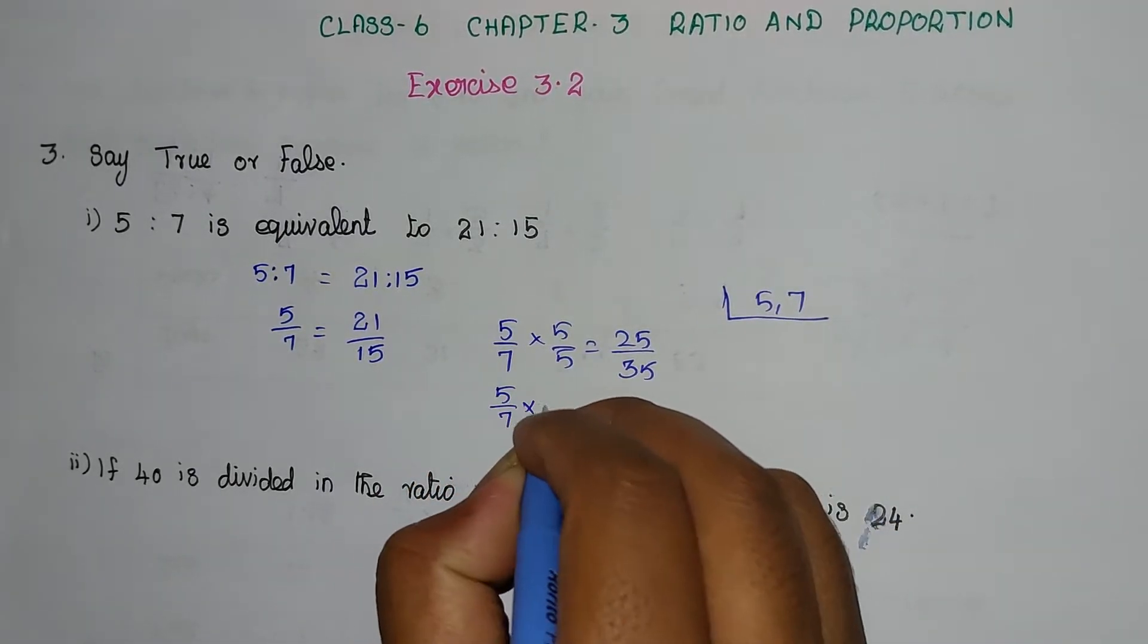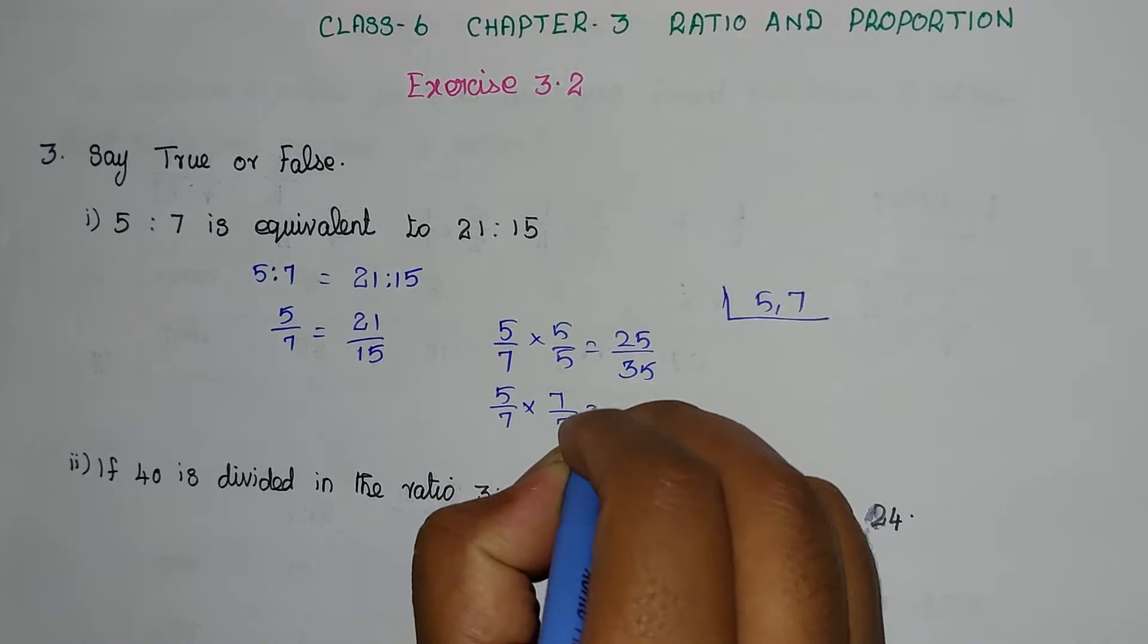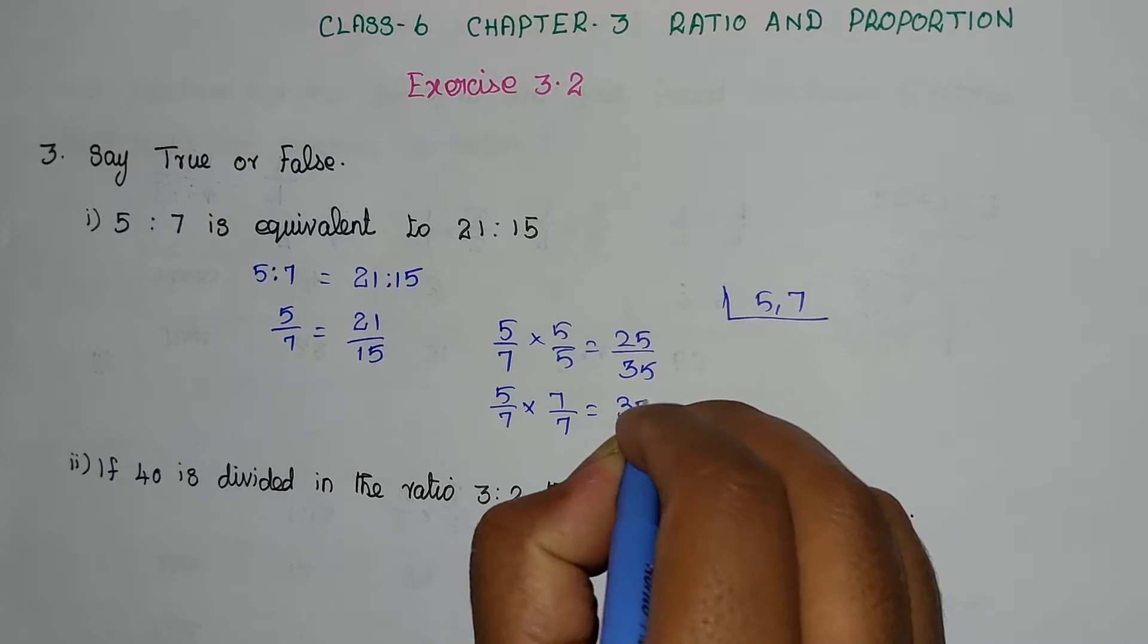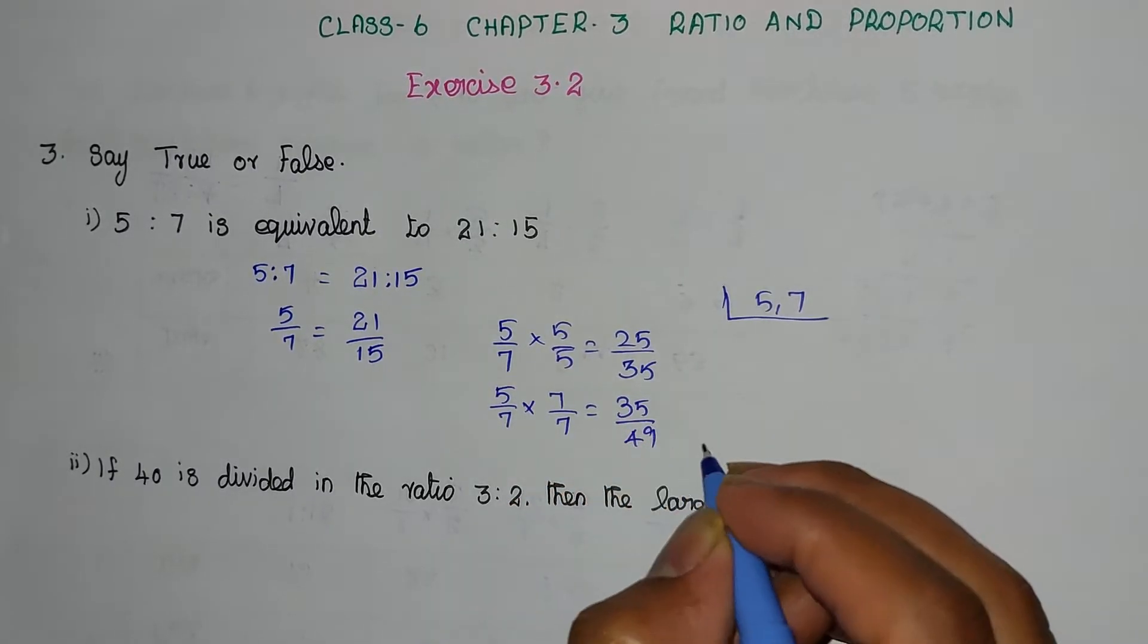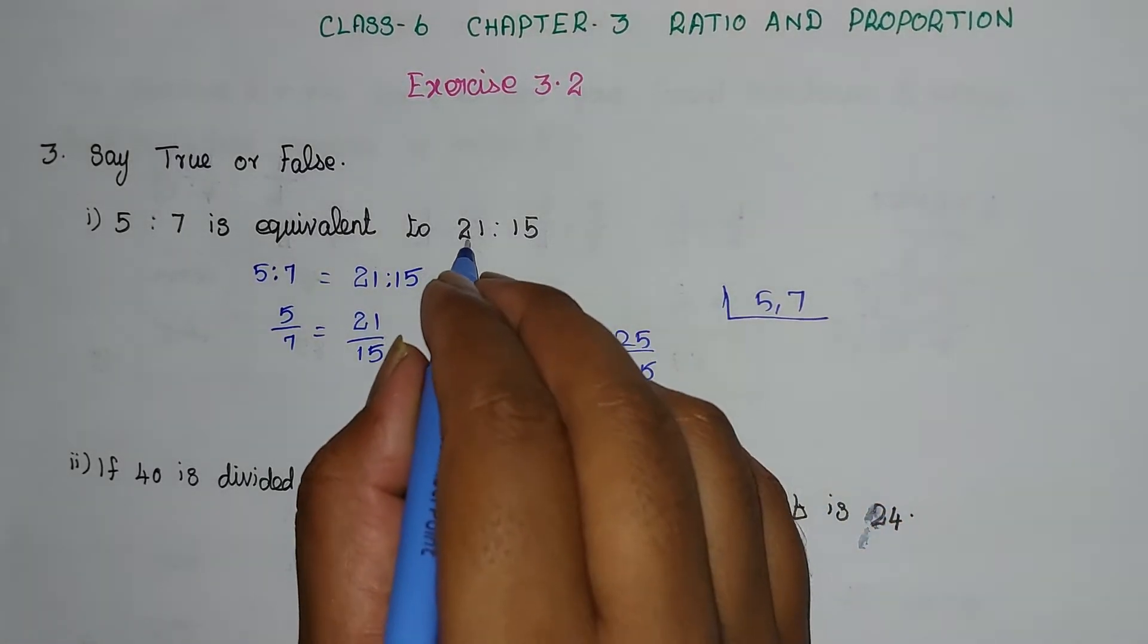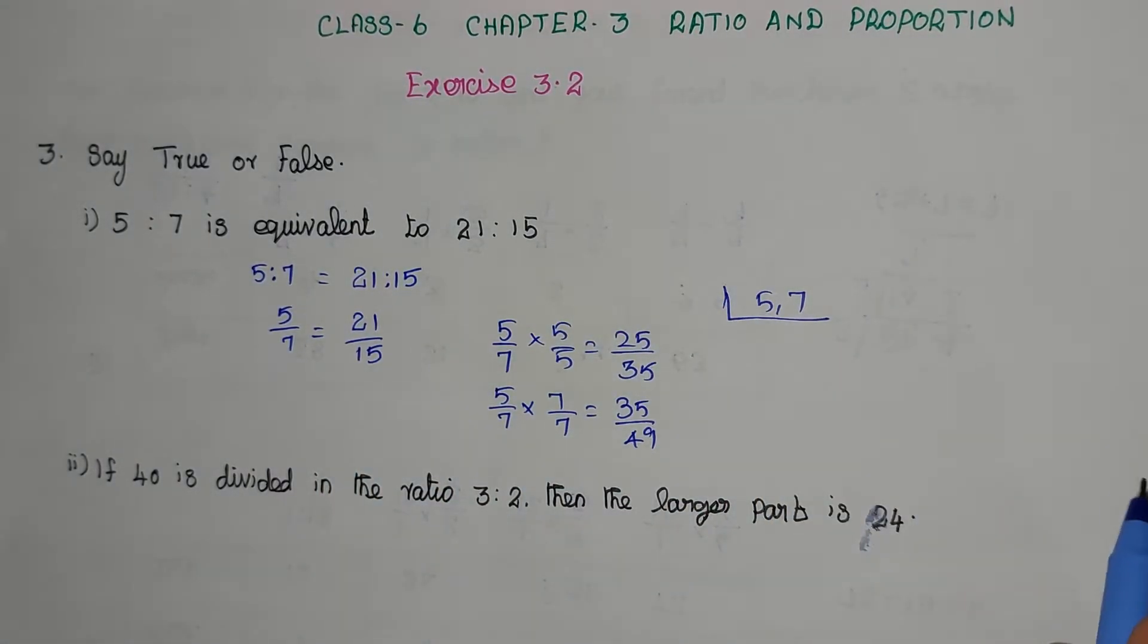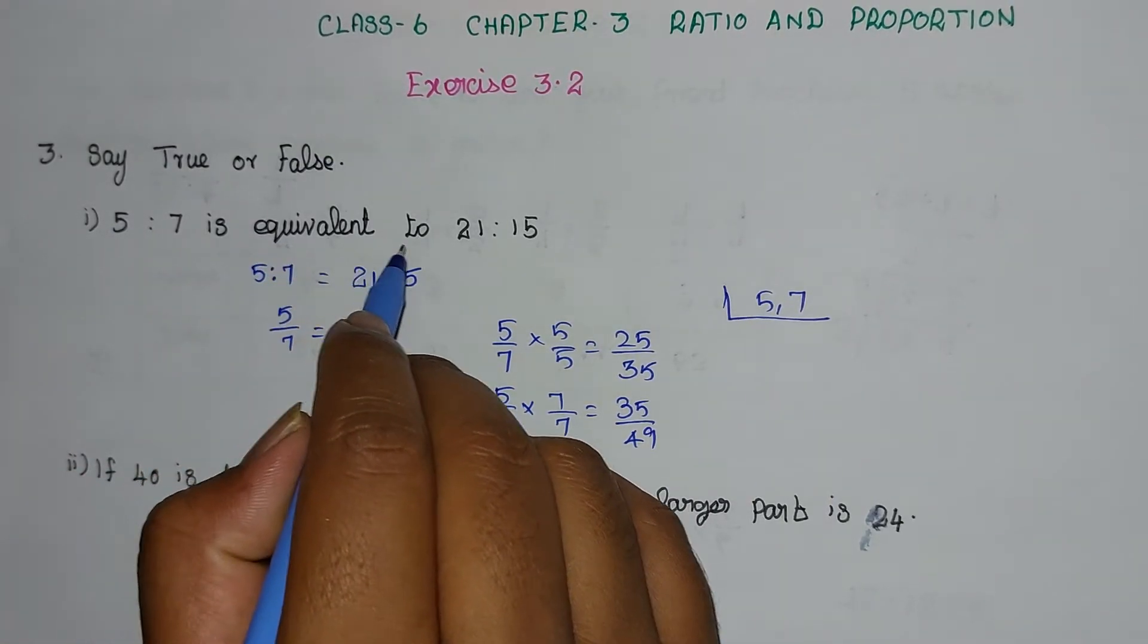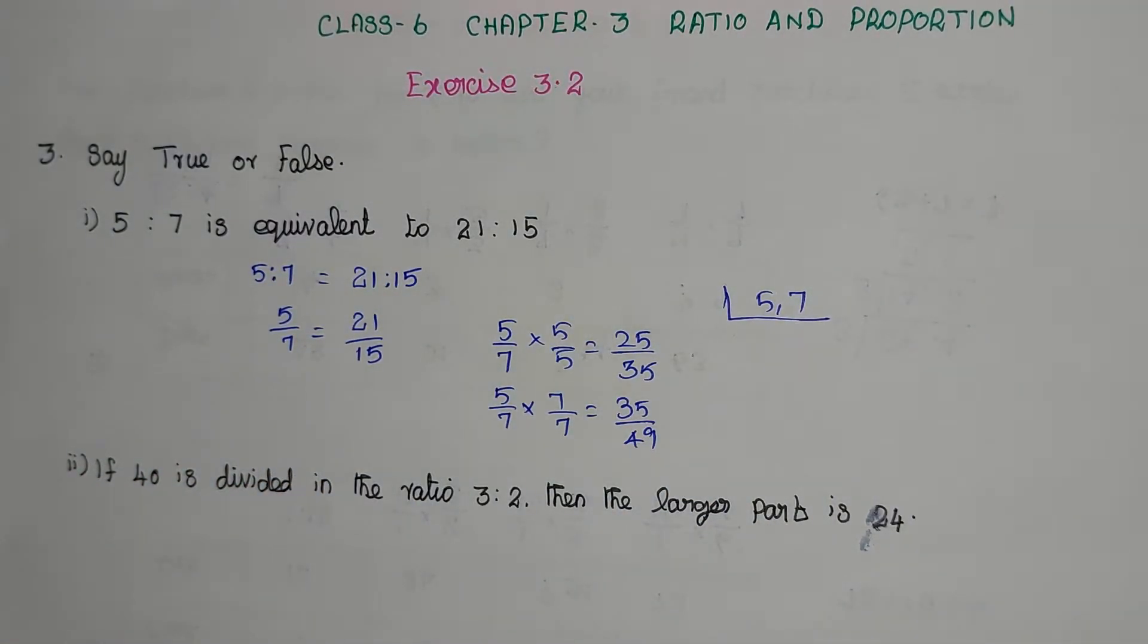5 times 7 equals 35. 7 times 7 equals 49. So 5 times 7 gives 35/49. This does not match 21/15. Therefore, 5:7 is not equivalent to 21:15. So the answer is false.